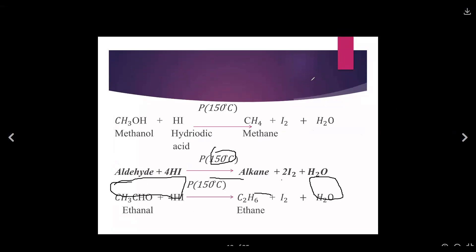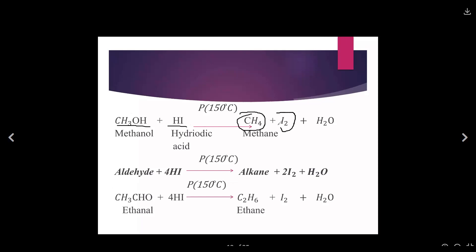As an example, methanol reacts with hydrogen iodide or hydroiodic acid and methane is produced, plus three molecules of iodine and water. Then we also have another reaction in the case of aldehyde. Aldehyde reacts with four molecules of hydrogen iodide in the presence of phosphorus at a temperature of 150 degrees centigrade, and an alkane is also produced.